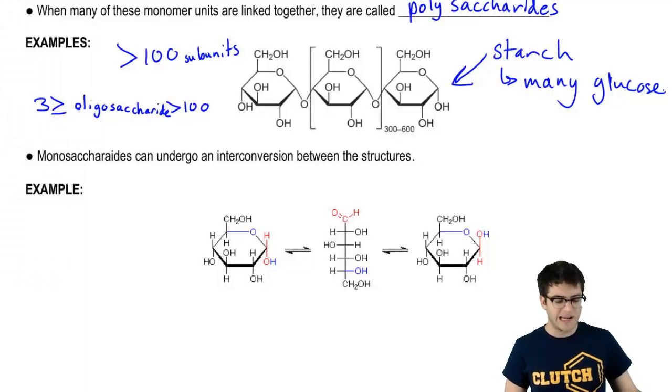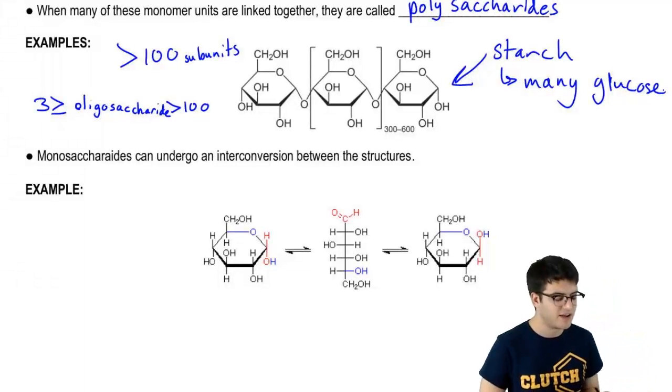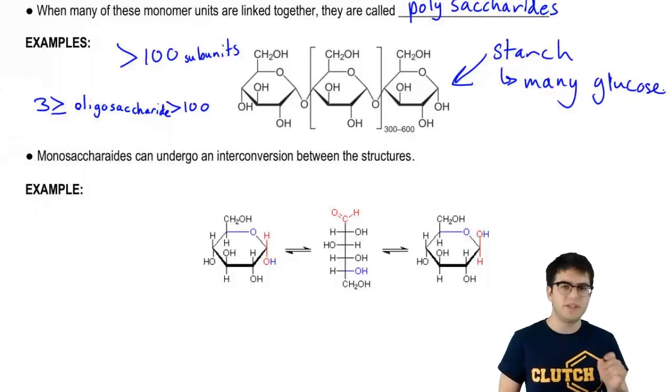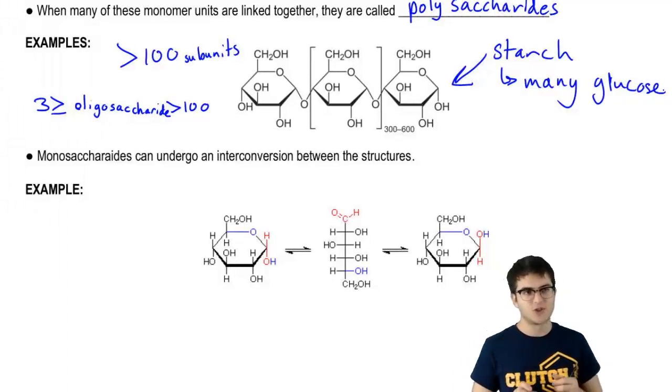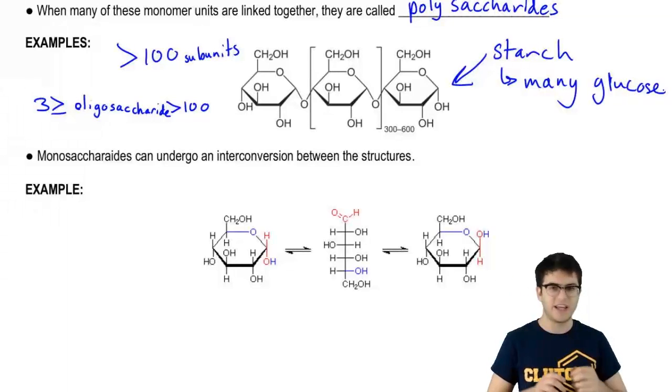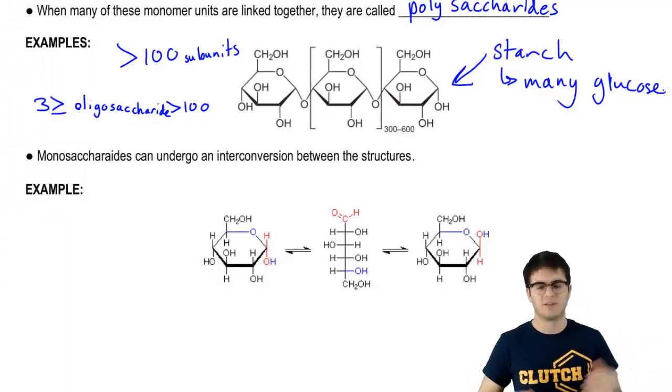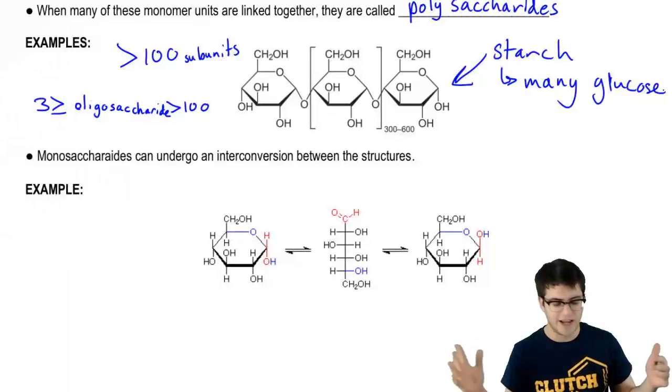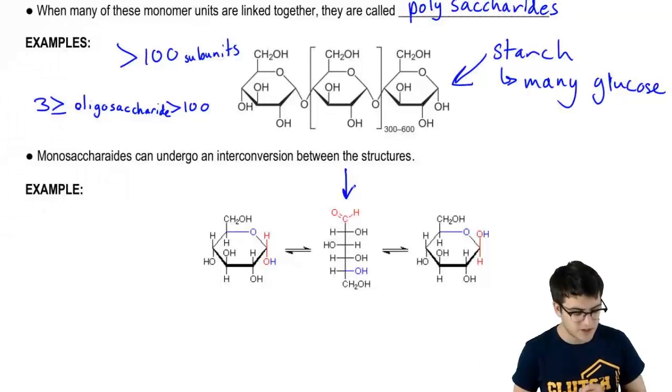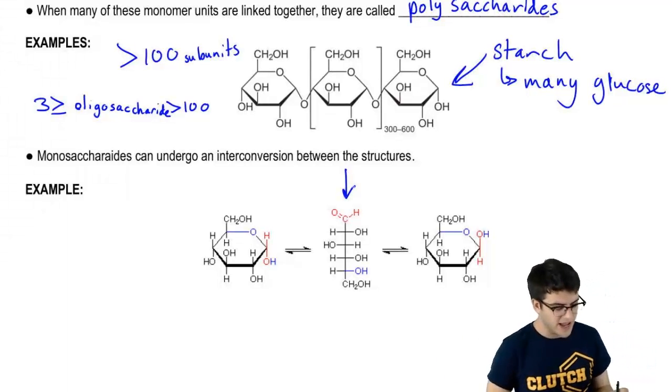Before we do, I want to talk about an interesting property that monosaccharides have. Up to this point, we've only seen the ring structure of most of these monosaccharides. However, monosaccharides can actually take what's called a straight chain form, or a chain form, or a linear form. Basically, not a ring, as you can see in this structure in the middle here.